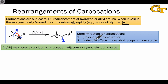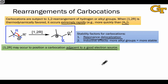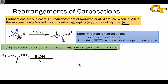Resonance delocalization is also an important stabilizing factor for carbocations. A 1,2 rearrangement that moves a carbocation adjacent to a good electron source — from a position where it wasn't adjacent to one — is going to be a heavily favored rearrangement that we need to watch out for. Take, for example, the reaction shown here.